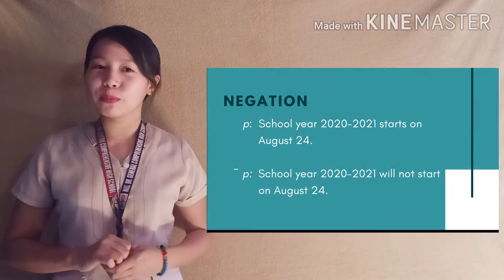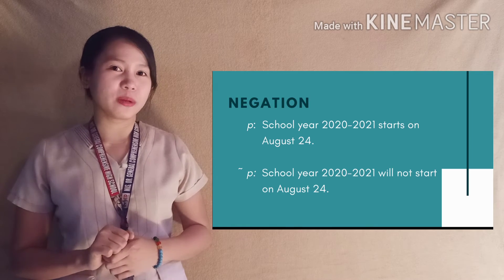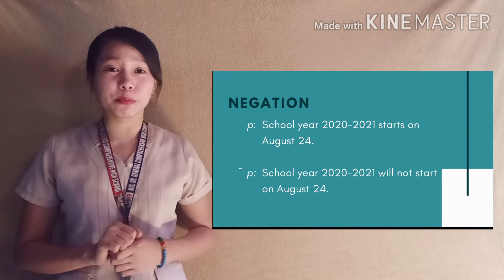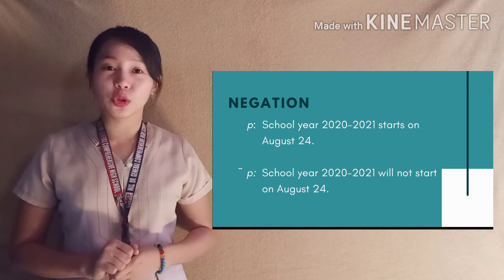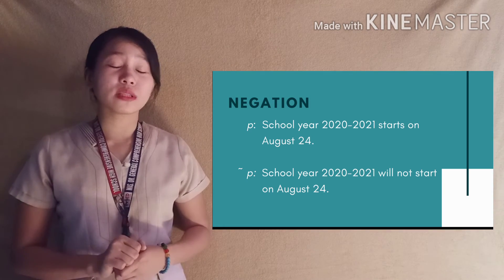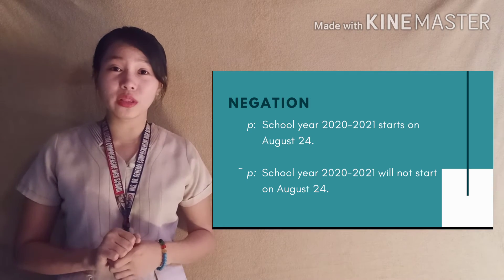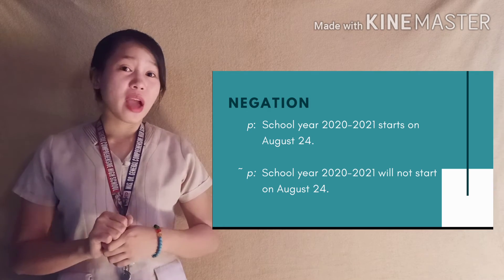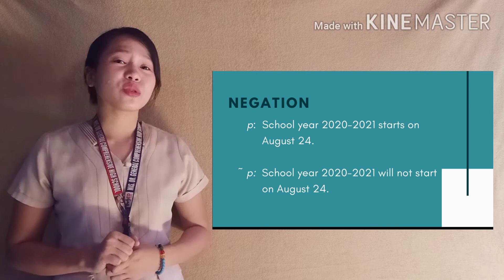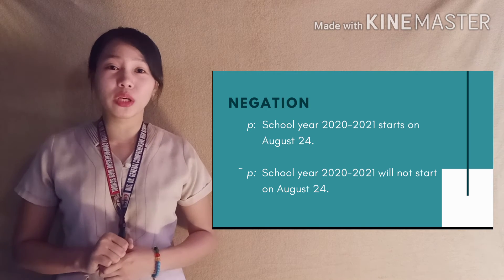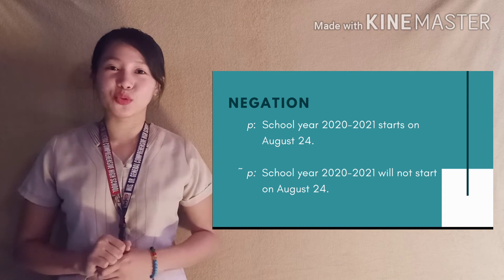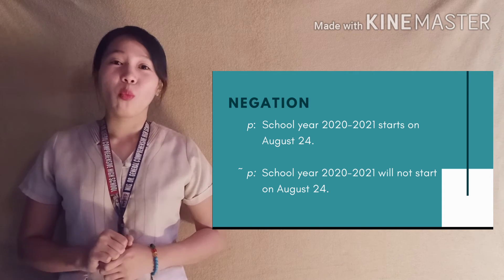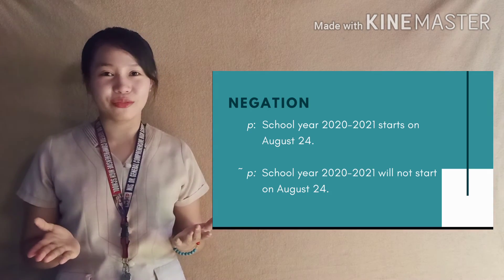And last but not the least, let's have an example for negation. If our proposition P is: School year 2020 to 2021 will start on August 24, then our negation would be: School year 2020 to 2021 will not start on August 24. What other examples can you think of?